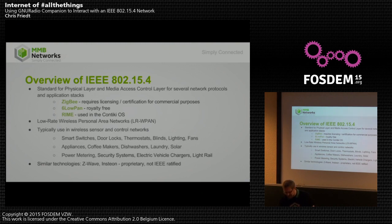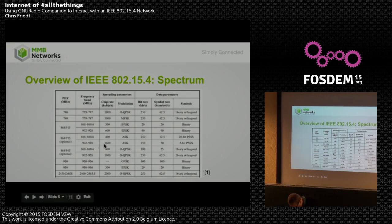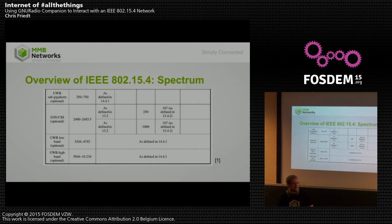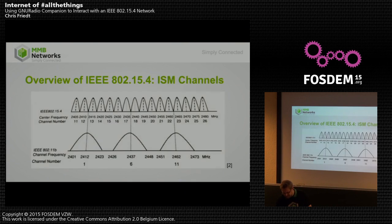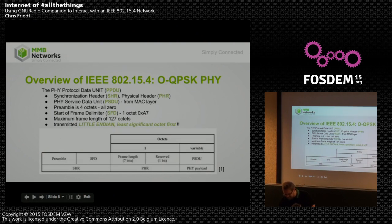I'll primarily be focusing on the ISM band for Zigbee — that's the OQPSK 2450 MHz direct sequence spread spectrum. There's also ultra-wideband now, which is interesting. There are channels 11 to 26, about five megahertz apart. The last channel we're not supposed to use as a rule of thumb, because it interferes with medical or military equipment.